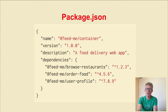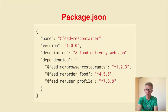You'll see the package.json of the container application with the name feed.me/container, which has three dependencies — three packages for our micro frontends: one for browsing restaurants, one for order food, and one for user profile. We bundle these together at build time with this package.json.